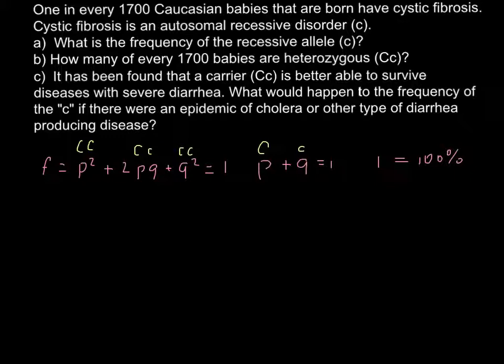We know that 1 out of 1700 people would be affected with this disease. This tells us that the genotype of these people would be homozygous recessive, small c small c. So we know q squared. q squared equals 1 divided by 1700, which equals 0.00059. This is the frequency of q squared or homozygous recessive.